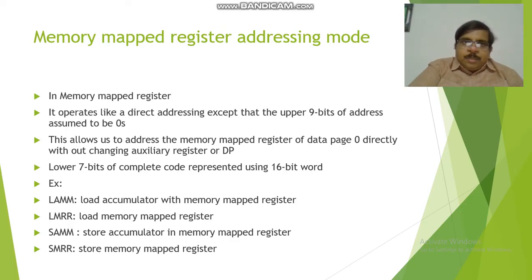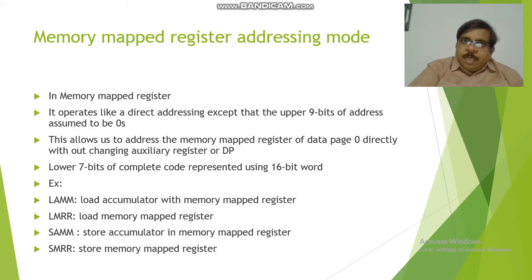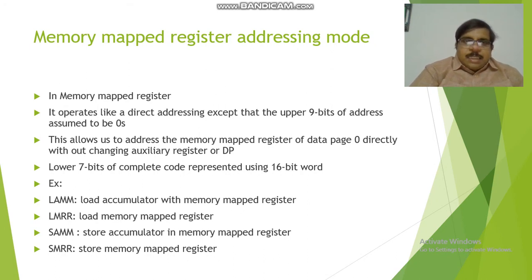In the memory mapped register addressing mode, it operates like a direct addressing mode except that the upper 9 bits of the address are assumed to be zeros and the lower 7 bits are represented using a 16-bit word. For example, LAMM, LMRR, SAMM, and SMRR are different types of memory mapped register addressing mode instructions. LAMM is load accumulator with memory mapped register. LMRR is load memory mapped register. SAMM is store accumulator in memory mapped register. And SMRR is store memory mapped register.